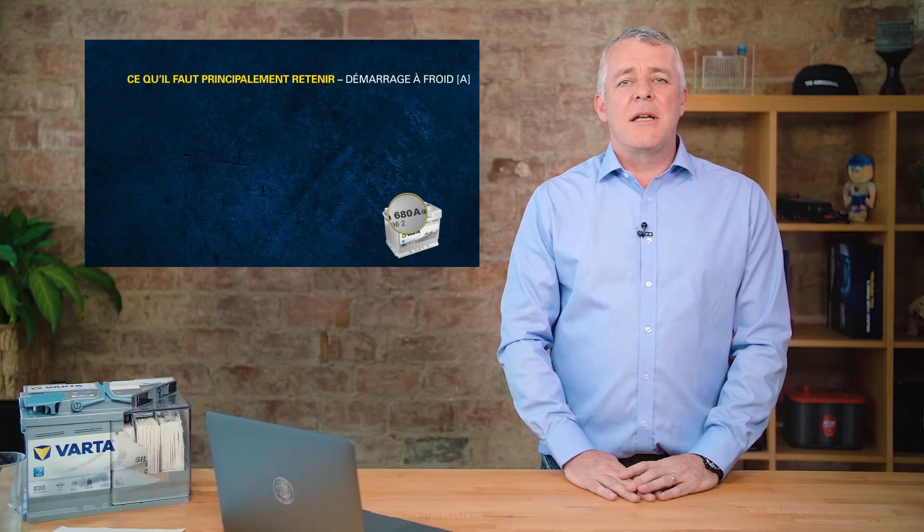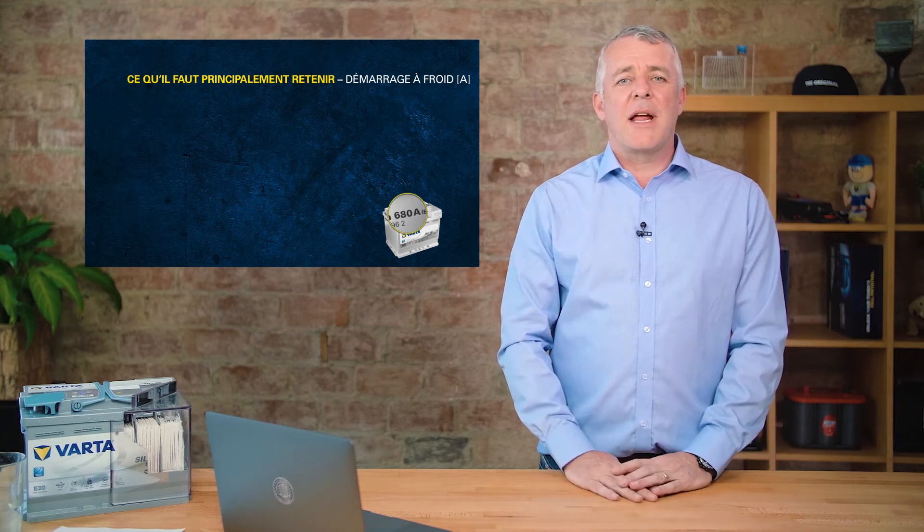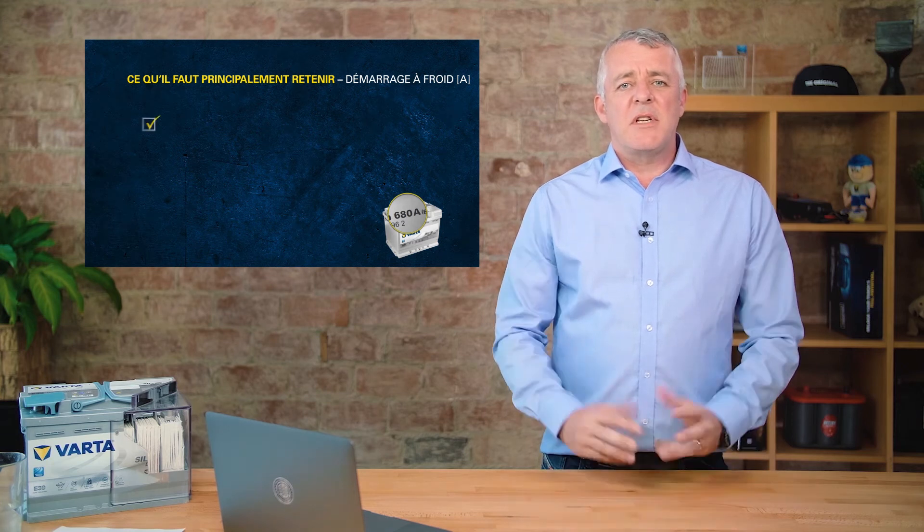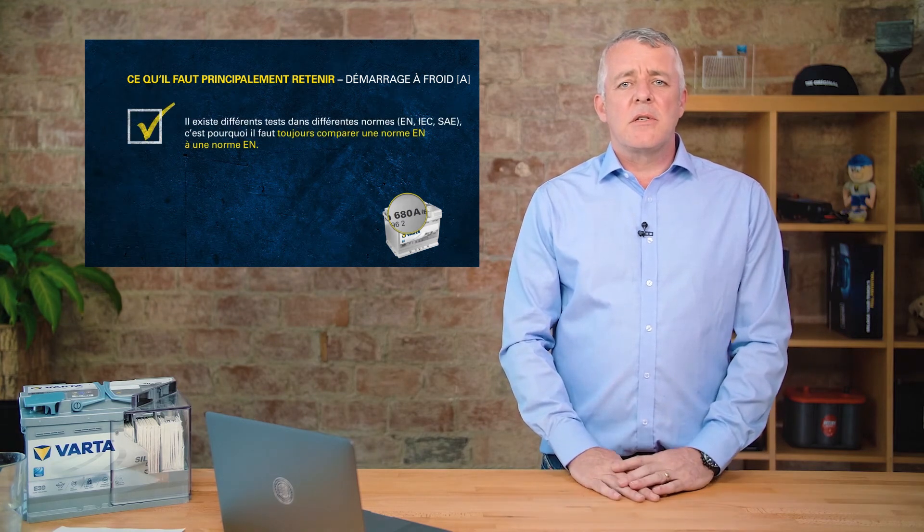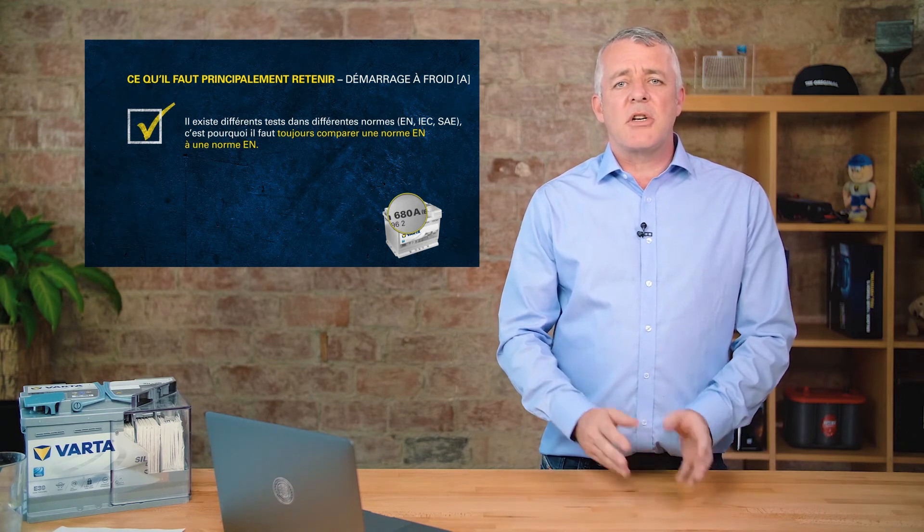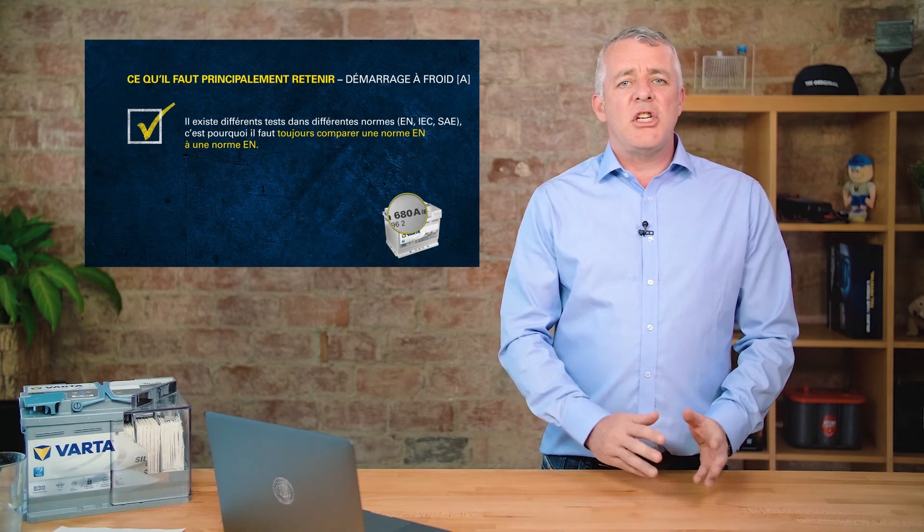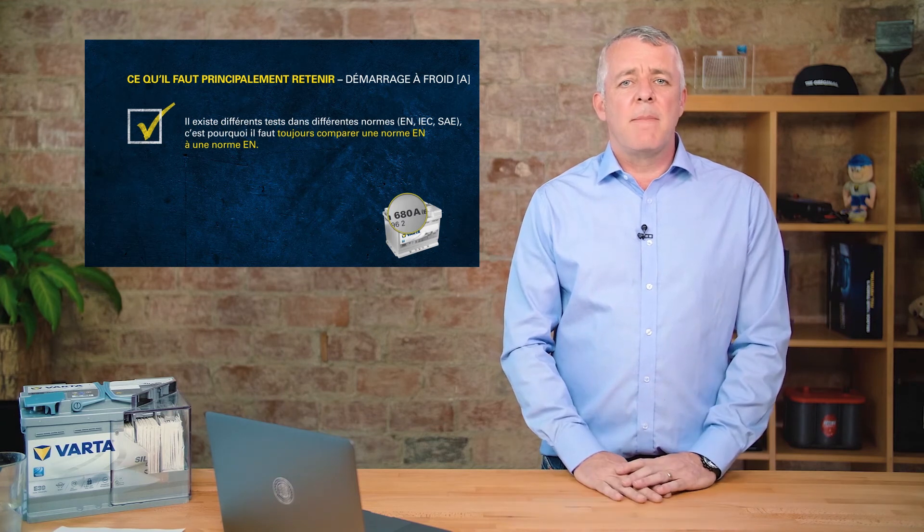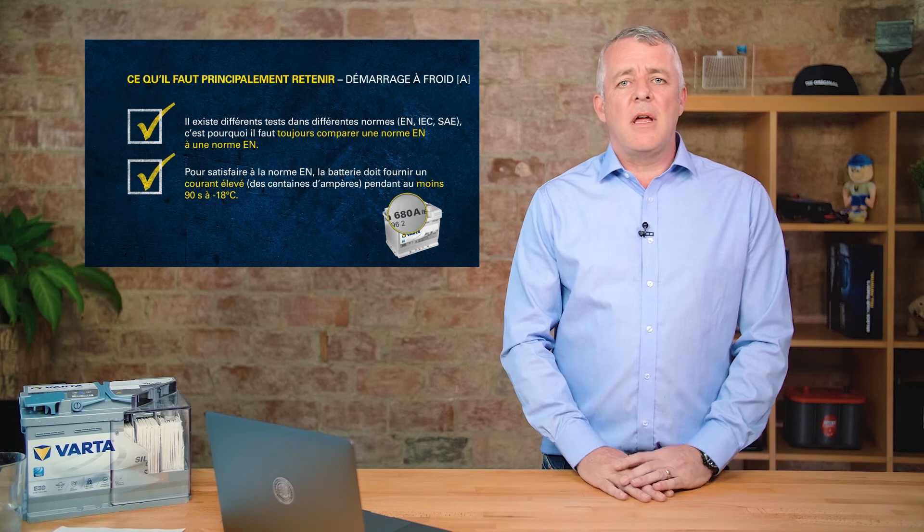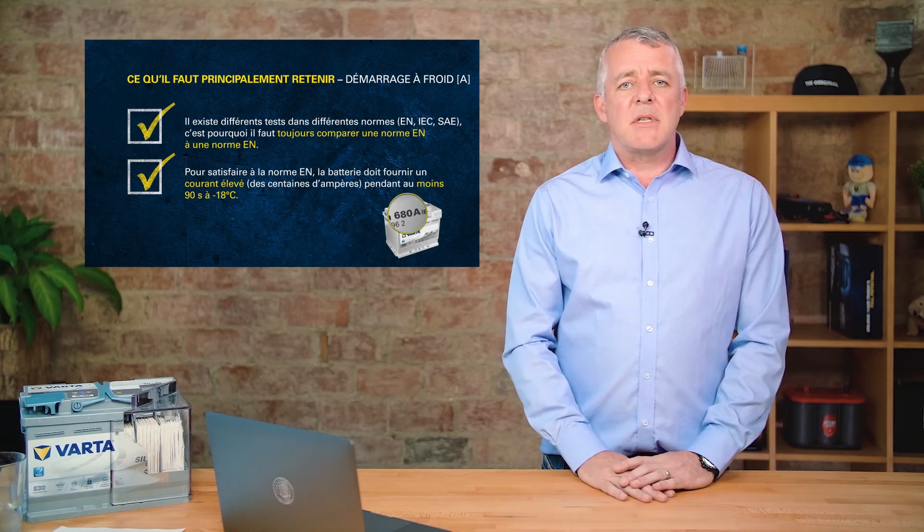Key takeaways: CCA or cold cranking amps is the amount of power that a battery can give. There are different standards for CCA, so it's important that we test like for like. We test an EN battery against an EN battery or a JIS battery against a JIS battery. It's also important to remember that our batteries fulfill the full EN standard for cold cranking amps.